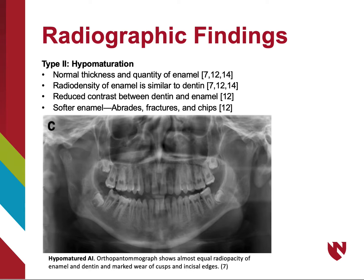In type 2, there is a normal thickness and quantity of enamel, but the radiodensity is similar to dentin, showing decreased contrast between the tissue types. The soft enamel presented in hypomaturation type is susceptible to abrasion, fracture, and chips. The pantomograph displayed here shows almost equal radiopacity of enamel and dentin, with marked wear on the anterior teeth.